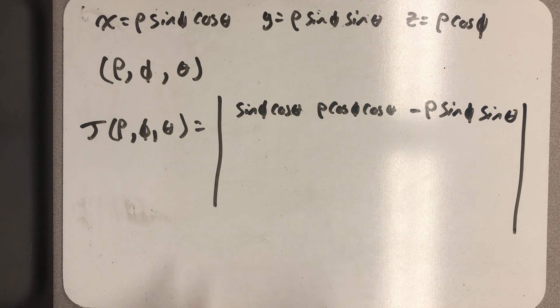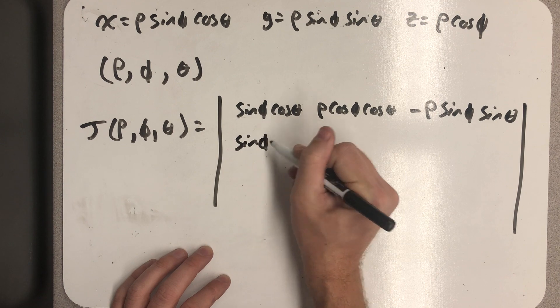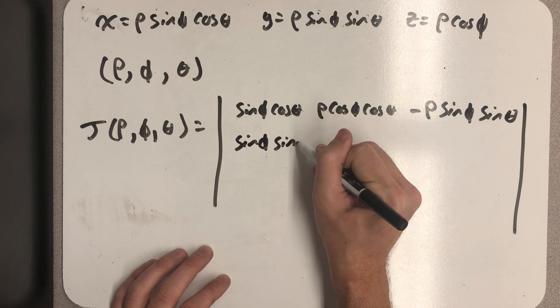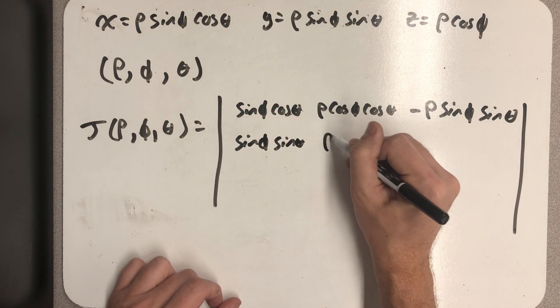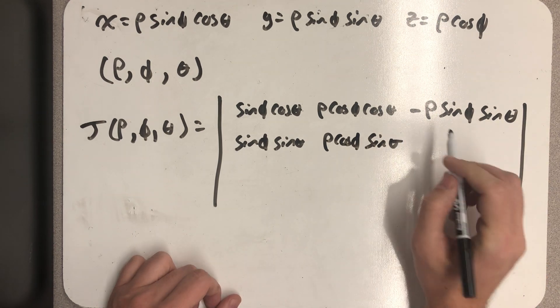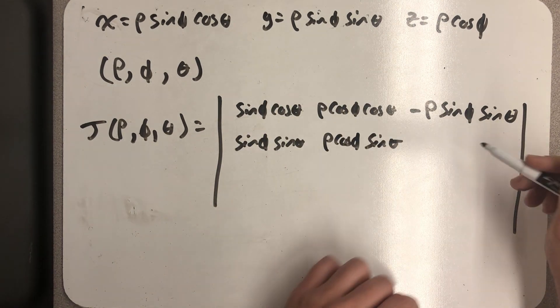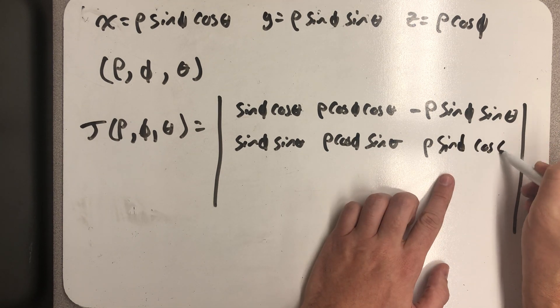Now I need to do the same thing for y. So the partial with respect to rho, sine phi sine theta. And then finally, with respect to theta, I would get rho sine phi cosine theta.